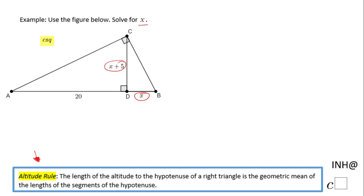It works for a right triangle, so the right triangle ABC, and DC is the altitude of this right triangle. What this altitude rule says is the length of the altitude to the hypotenuse, so in our case x plus 5, is the geometric mean, square root of a product.